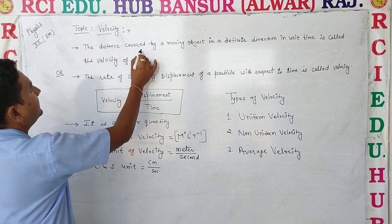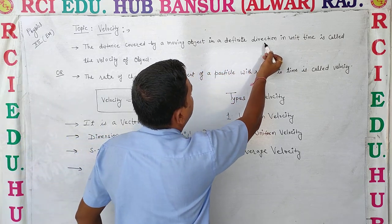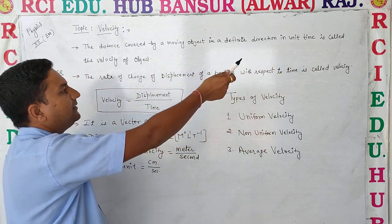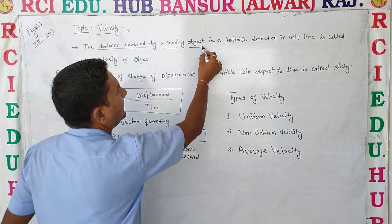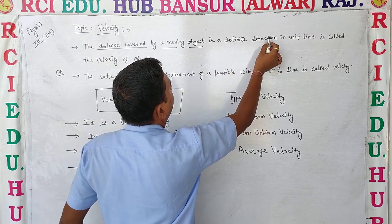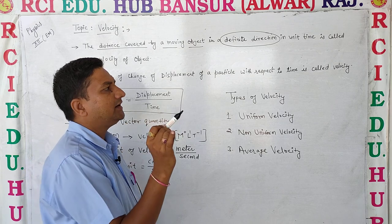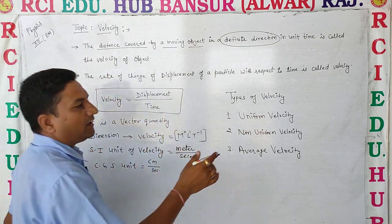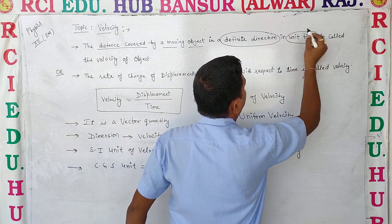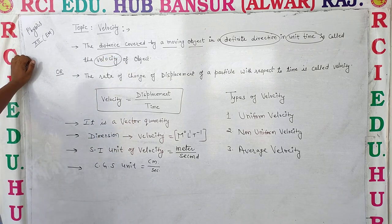The distance covered by a moving object in a definite direction in a unit time is called Velocity. The distance covered by a moving object in a definite direction — the velocity of that object is defined by that particular direction.